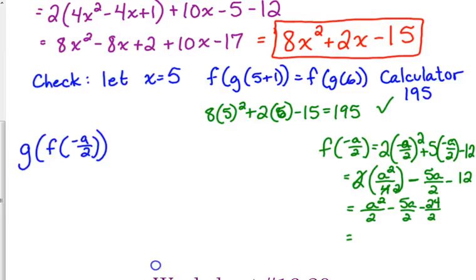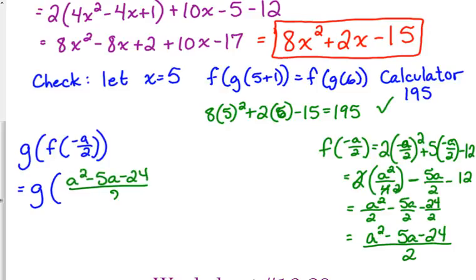Well, since they're over 2, I want my 12 to be over 2 as well. So that would be 24 over 2. So final answer here that I would write is a squared minus 5a minus 24 all over 2.